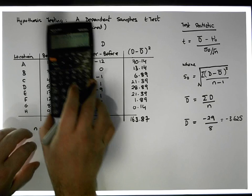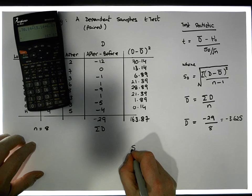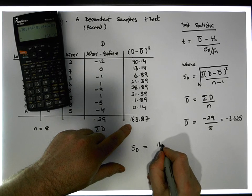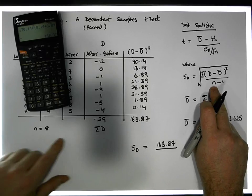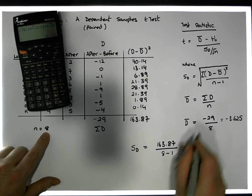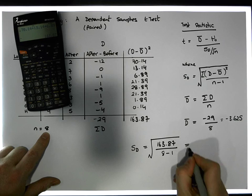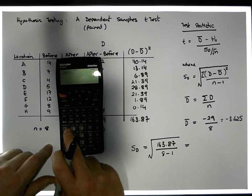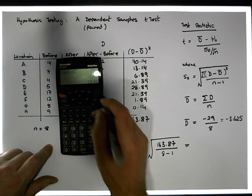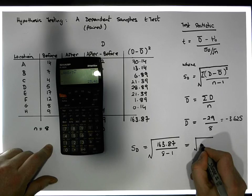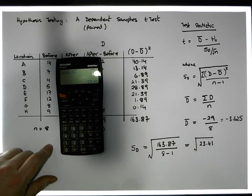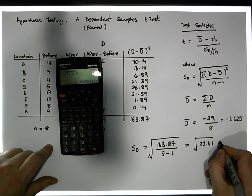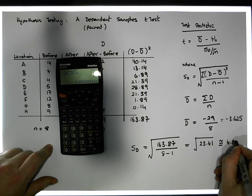So what we now know is that our standard deviation S_d is equal to the square root of the sum of squared differences, which is 163.87, divided by the sample size minus 1 — that's 8 minus 1, which is 7. So I divide 163.87 by 7, which gives me 23.42 to two decimal places. The square root of 23.41 is approximately equal to 4.84 to two decimal places.